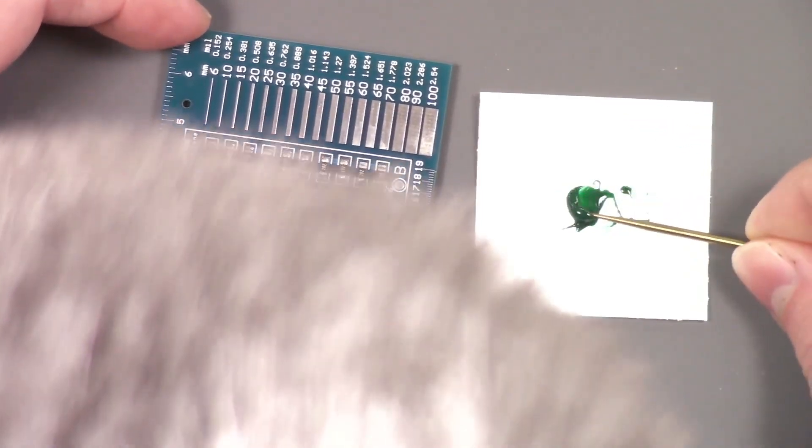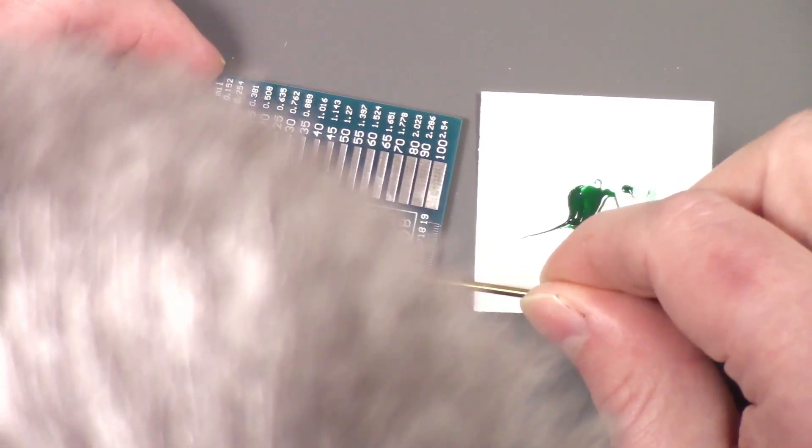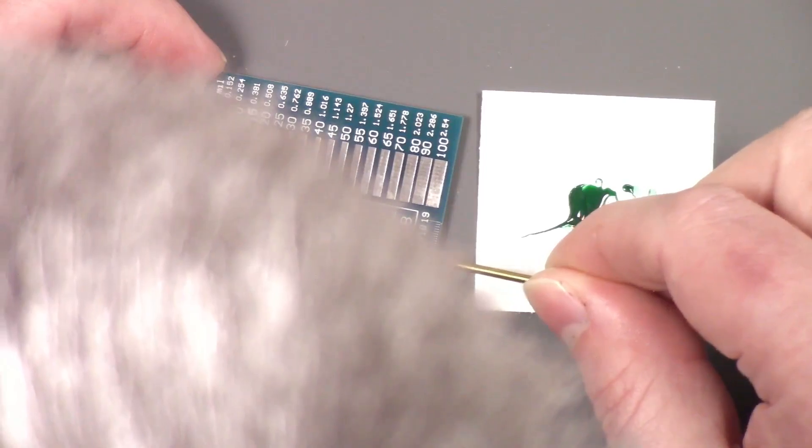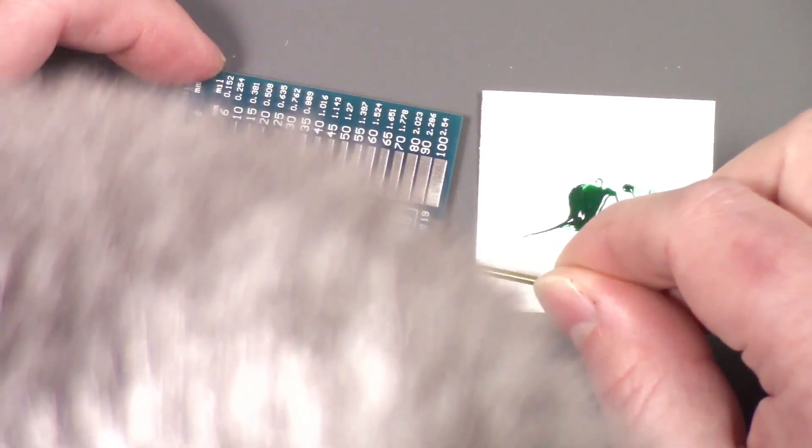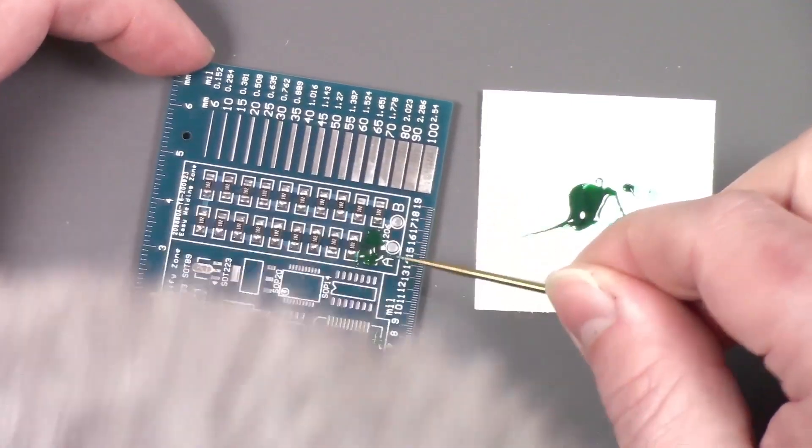So we got that on there. And then I'm going to cover a component. I'm going to cover this resistor right here with a thick glob because sometimes you got to do filters and stuff. A nice thick glob covering that up.